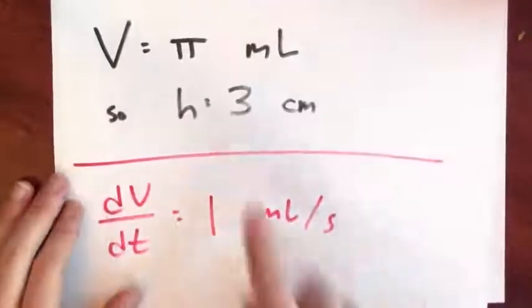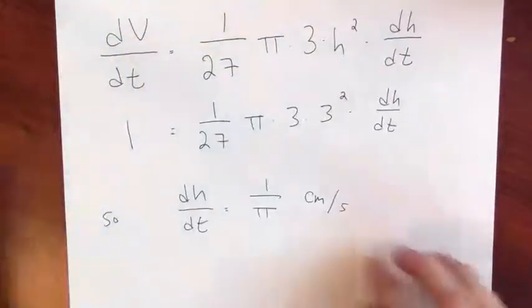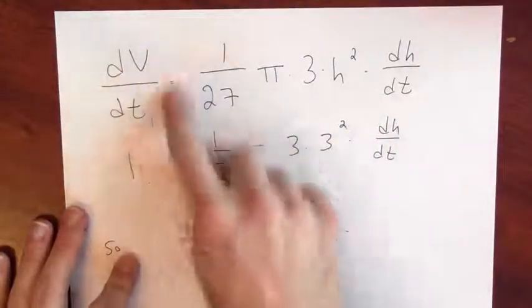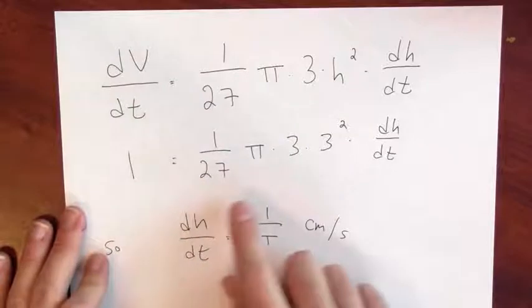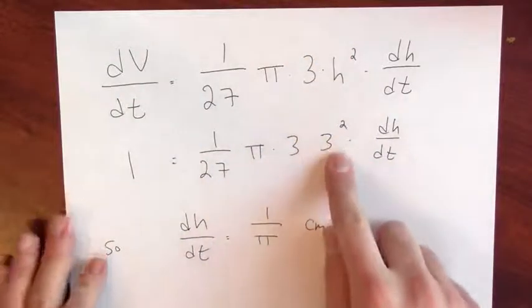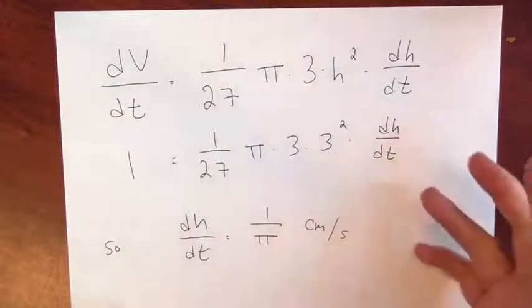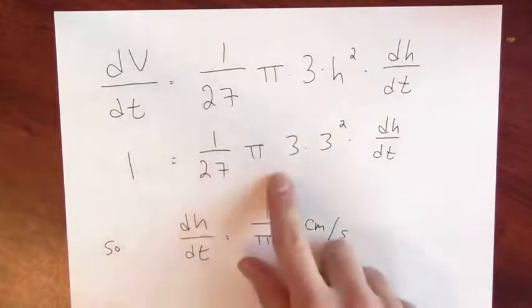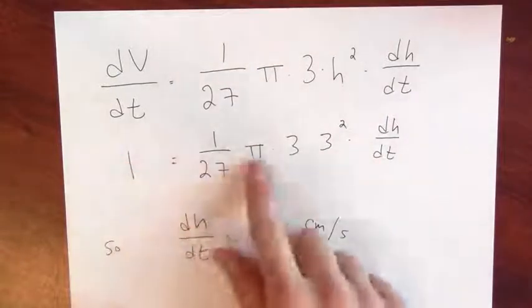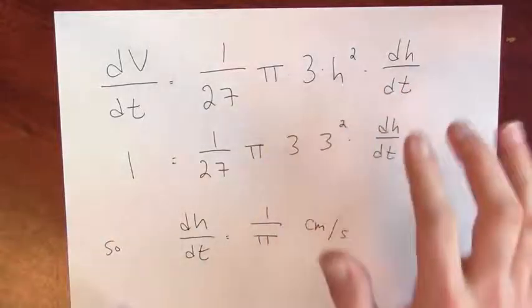Once I know that, I can take this fact and the fact that I'm told dv/dt and plug those in to the formula that relates dv/dt and dh/dt. I'm interested in dh/dt, but I know that dv/dt is 1, and I know h at this particular moment is 3 centimeters. All I've got to do is solve this equation for dh/dt. The 3 times 3 squared, that's 27, which cancels this 1/27. Then I divide both sides by pi, and 1/pi is dh/dt. So now I know how quickly the water height is changing. It's changing at a rate of 1/pi centimeters per second at this particular moment.